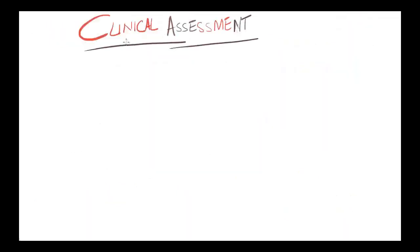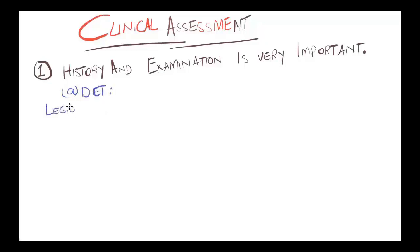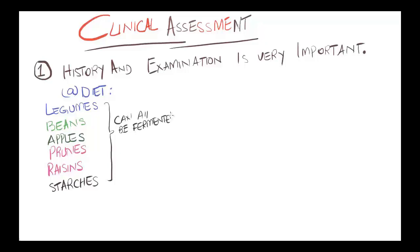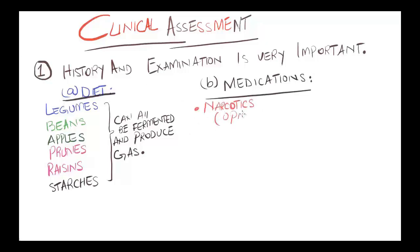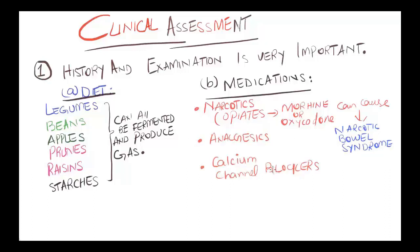Clinical assessment of a patient presenting with bloating begins with history and examination. First, assess the diet. If the patient is taking legumes, beans, apples, prunes, raisins, and starches, these can be fermented resulting in gas production. Medication history is important. If the patient is taking narcotics like opiates, morphine, or oxycodone, these can cause narcotic bowel syndrome. Analgesics and calcium channel blockers also play an important role.